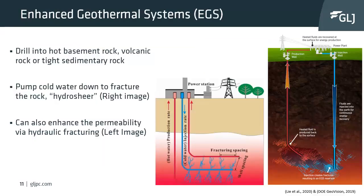The second type, enhanced geothermal systems, is getting more and more to the forefront. With EGS, we drill into hot basement, volcanic, or hot sedimentary rock deep underground. Cold water is pumped down into fractures to open them — a process called hydroshearing — artificially stimulating these fractures. Water flows through the fractures and hot water comes to the surface. Another form of EGS uses hydraulic fracturing with horizontal wells, like oil and gas, with injection-producer pairs to inject and produce cold and hot water.